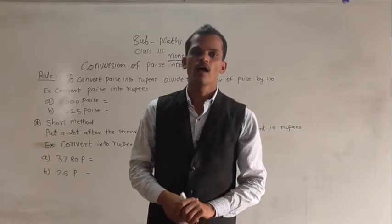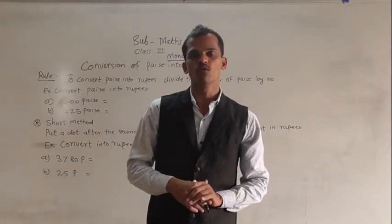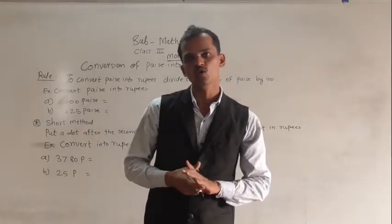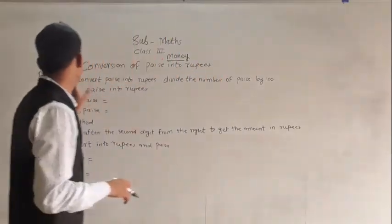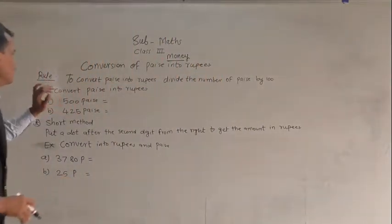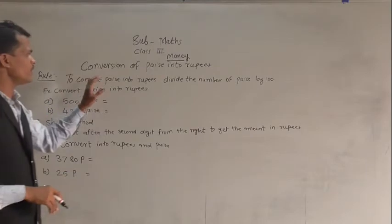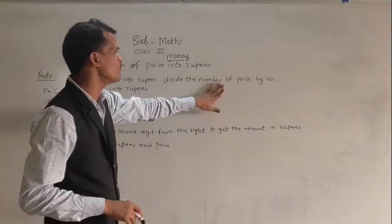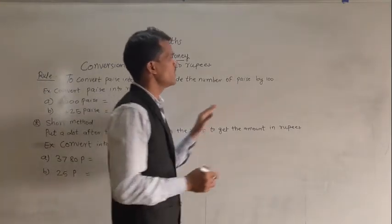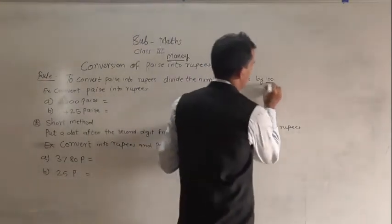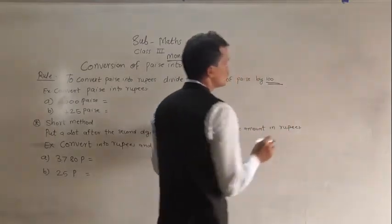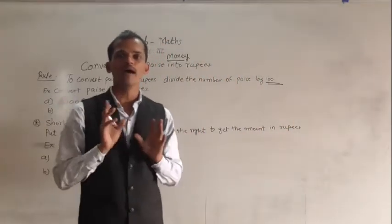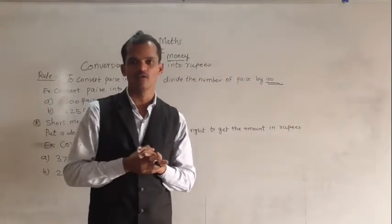Today, we will learn how to convert paise into rupees. The rule is: to convert paise into rupees, divide the number of paise by 100.